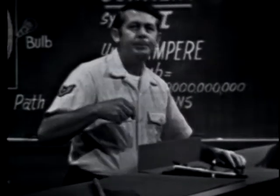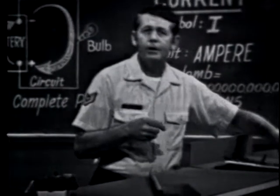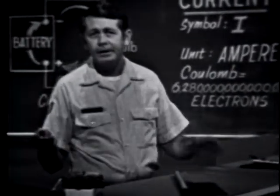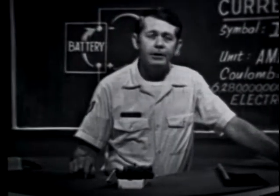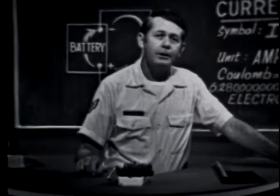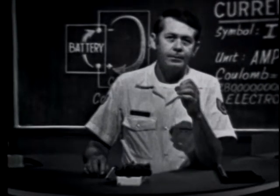So another requirement for current is a complete path through which the electrons can flow. Keep in mind that if we generate a high enough voltage, current will flow through anything, but to keep the voltages in a practical range we'll usually use conductors. Now there are a few more facts about current that we should know.